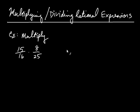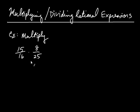Let's talk about multiplying and dividing rational expressions. All a rational expression is is a fraction where the numerator and denominator are polynomials. So what we're going to do is we're going to first multiply two fractions together, and then we're going to take what we know from this example and apply it to multiplying rational expressions.